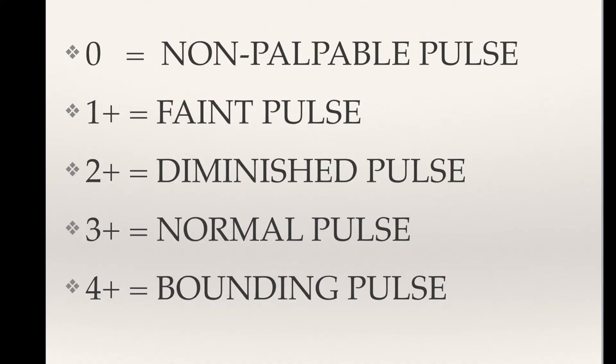Now you want to assess the strength of a pulse. Pulses can be described as zero, indicating no palpable pulse; one plus, indicating a faint pulse; two plus, suggesting a slightly more diminished pulse than normal; three plus, a normal pulse; and four plus, indicating a bounding pulse.